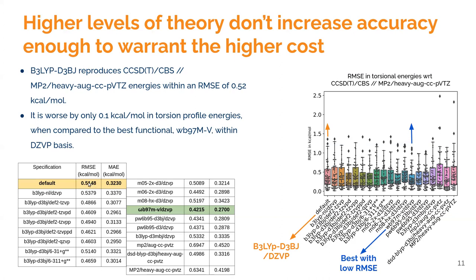We extended the scope and did another benchmark recently on torsion profile energies, including diverse chemistries such as hypervalent sulfur, nitrogens in different hybridizations, biaryls, halogens, and many charged molecules. It turns out our initially chosen level of theory provides a remarkably good balance of speed versus accuracy. Our default B3LYP-D3BJ within DZVP reproduces reference CCSD(T) in the complete basis set limit within 0.52 kcal/mol. The top performer is a range-separated hybrid with an error of 0.42 kcal/mol — only 0.1 kcal/mol better — so we don't think there is a need to switch theory levels and discard all the data generated over the last five years.